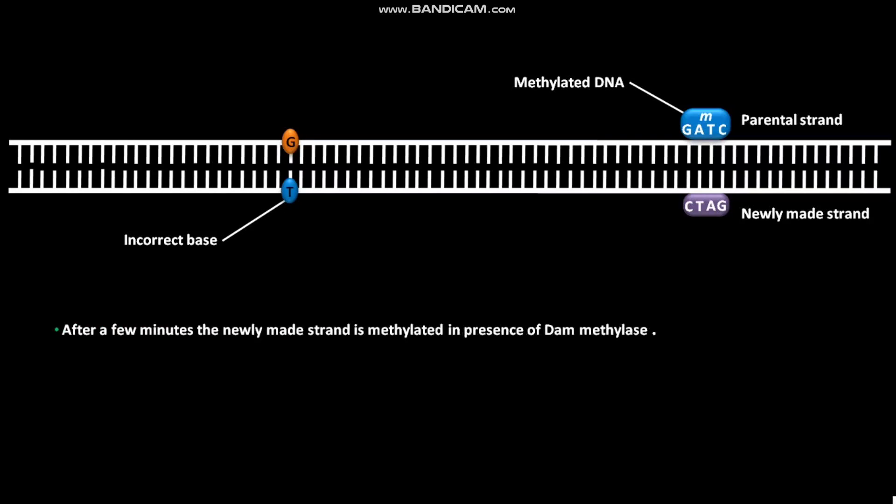After a few minutes, the newly made strand is methylated in presence of DEM-methylase. So, the two strands cannot be distinguished. DEM-methylase methylates DNA at the N6 position of all adenines within 5' GATC sequences.